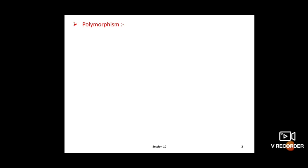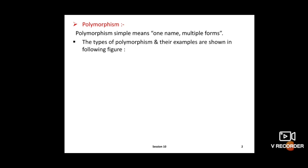We have already seen different OOP concepts: class, objects, polymorphism, inheritance, encapsulation, and data abstraction. One of these OOP concepts is polymorphism. Polymorphism means one name, multiple forms — in simple words, one name multiple forms.